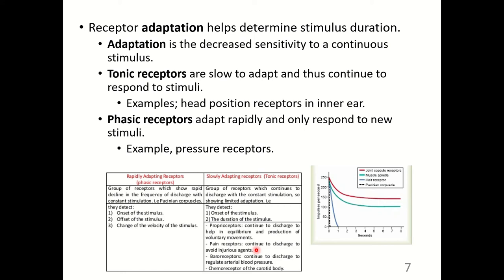Pain receptors also continue to discharge to avoid injury. Baroreceptors continue to discharge to regulate arterial blood pressure so that blood pressure remains constant. Chemoreceptors of the carotid body help regulate pH and other blood chemistry.